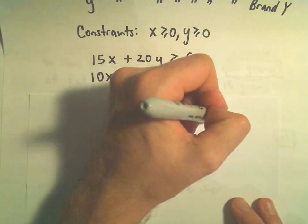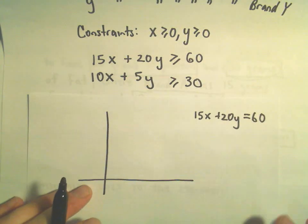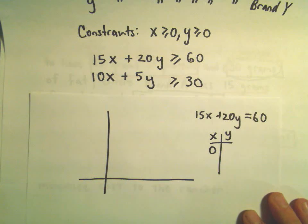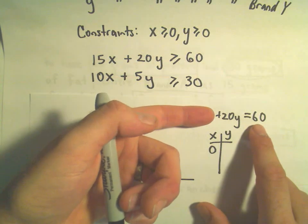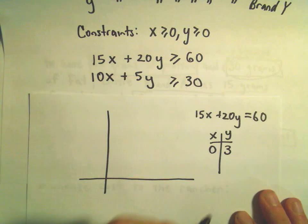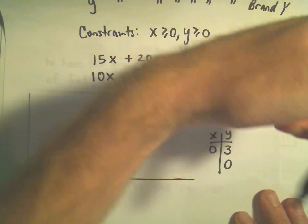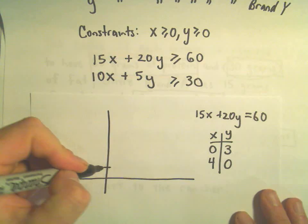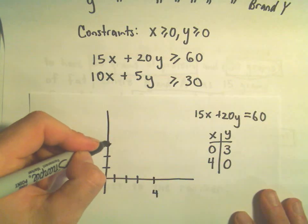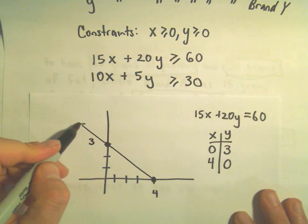Let's graph 15X plus 20Y equals 60 by finding X and Y intercepts. If we substitute X equals 0, we get 20Y equals 60, so Y equals 3. If we plug in Y equals 0, we get 15X equals 60, so X equals 4. Connecting those two points gives us the line.